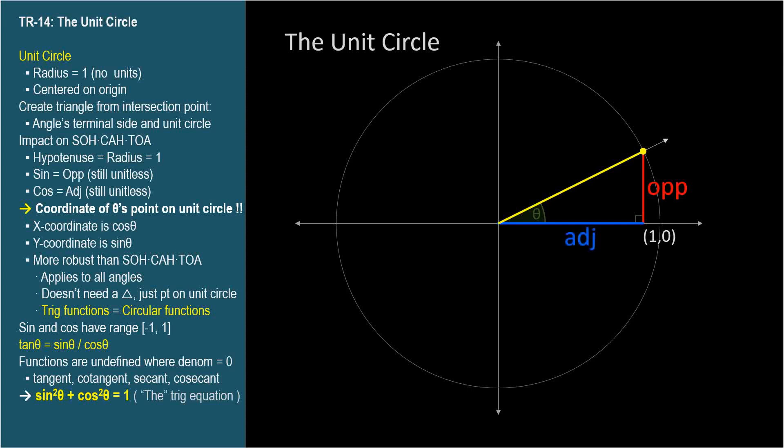This gives us a right triangle with side lengths we'll call opposite, adjacent, and hypotenuse. Since the radius of the circle is 1, the length of the hypotenuse is 1. Let's see what this does to our trig ratios.